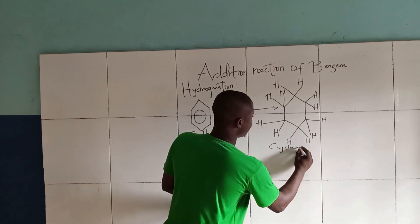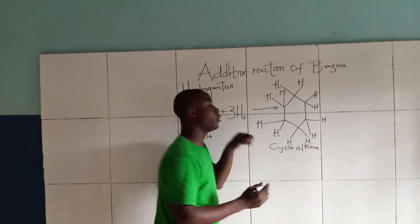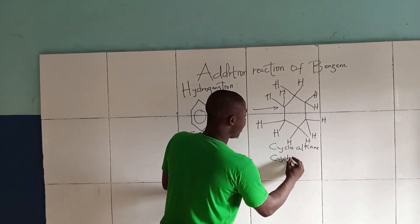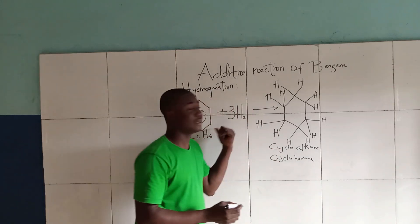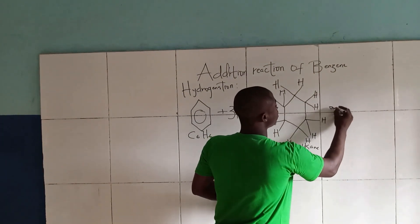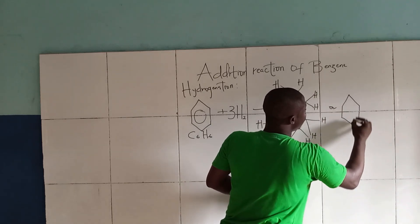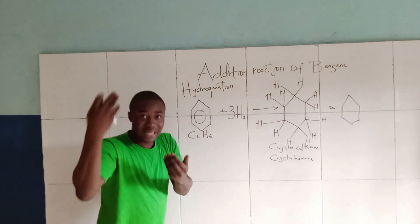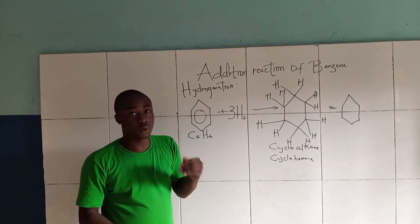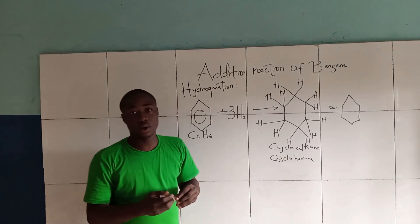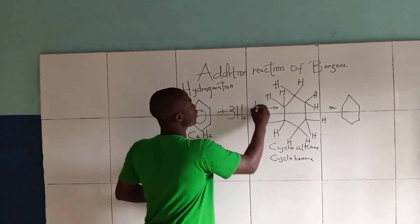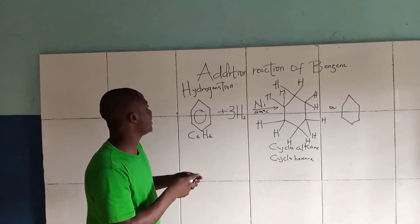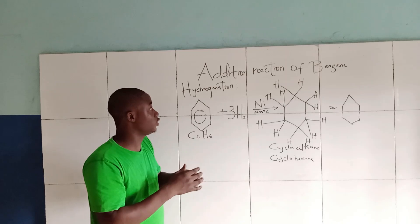This is a cyclohexane. Whenever Benzene undergoes hydrogenation — precisely an addition reaction — we are going to get cyclohexane. The catalyst used here during this reaction is Nickel, and it works at a temperature of about 200 degrees Celsius. This is the Hydrogenation reaction of Benzene.